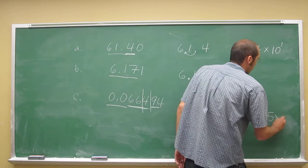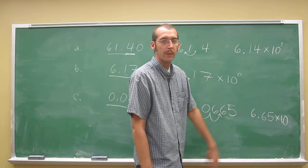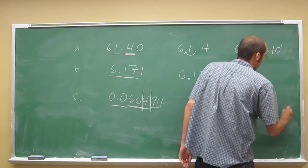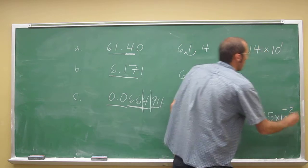And that something is however many spaces we moved it. Since we moved it to the right, it's going to be negative. And since we moved it two spaces, it's going to be negative two.